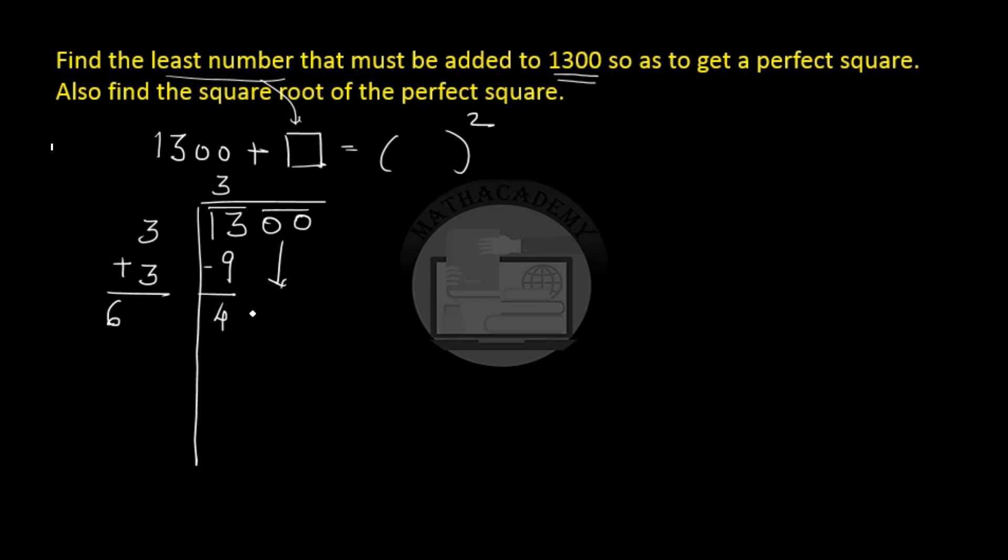Now we take down both the zeros and we see that 66 times 6 is 396. We get 4 as the remainder and here whatever we have put in this block has to be added again to give us a 72 here. So when we try to find the square root of 1300 by the division method we get 4 as the remainder.